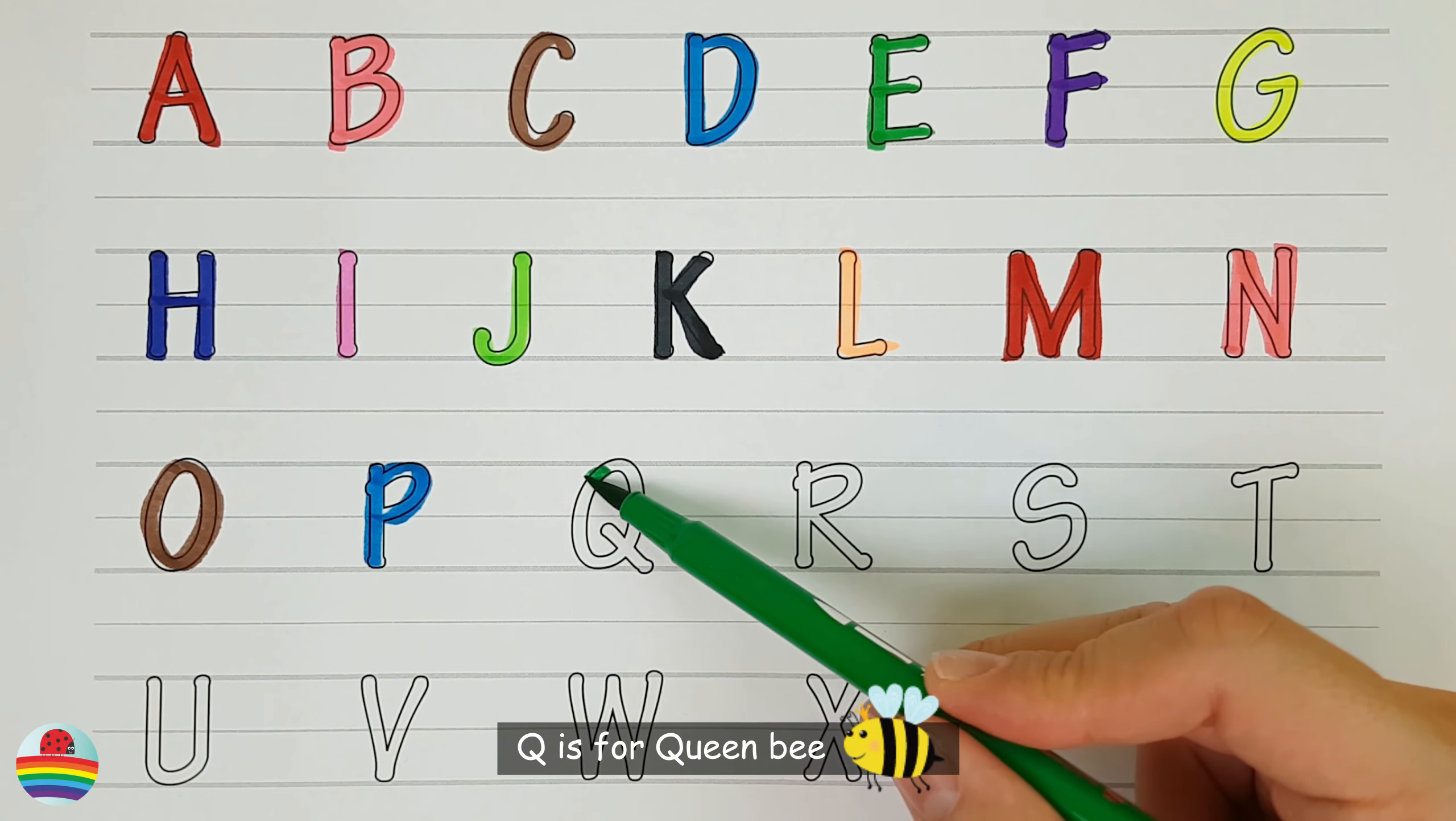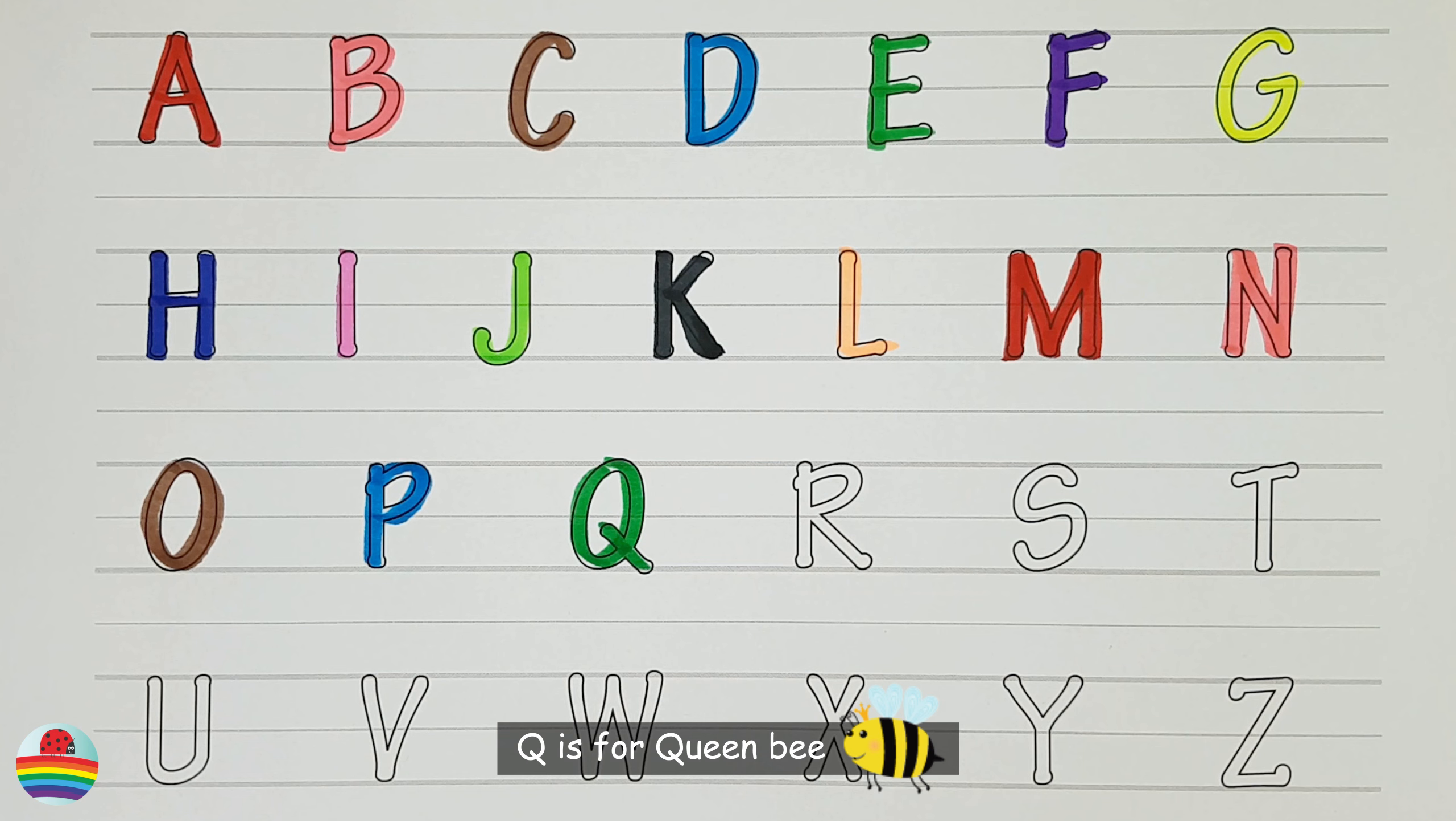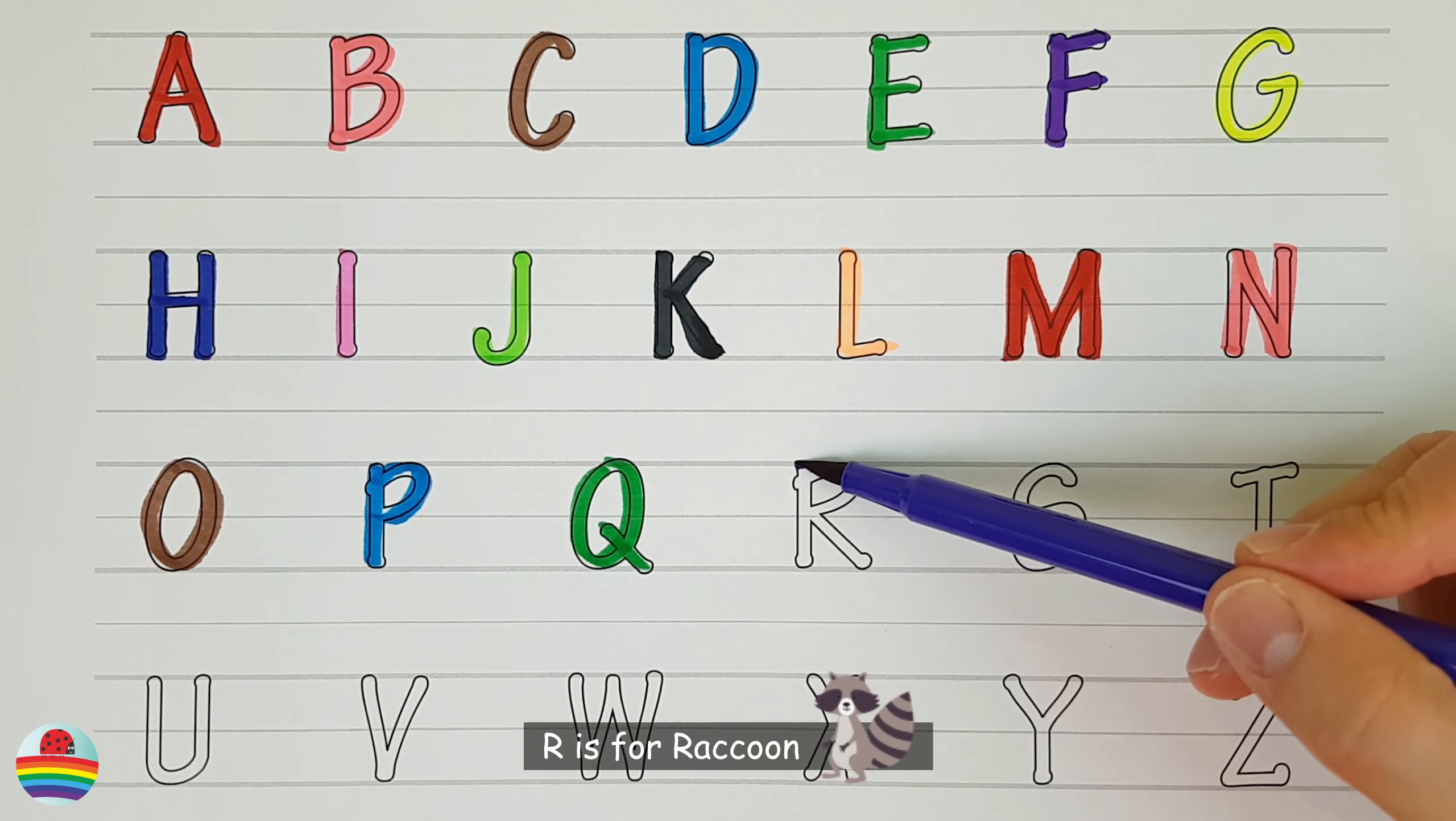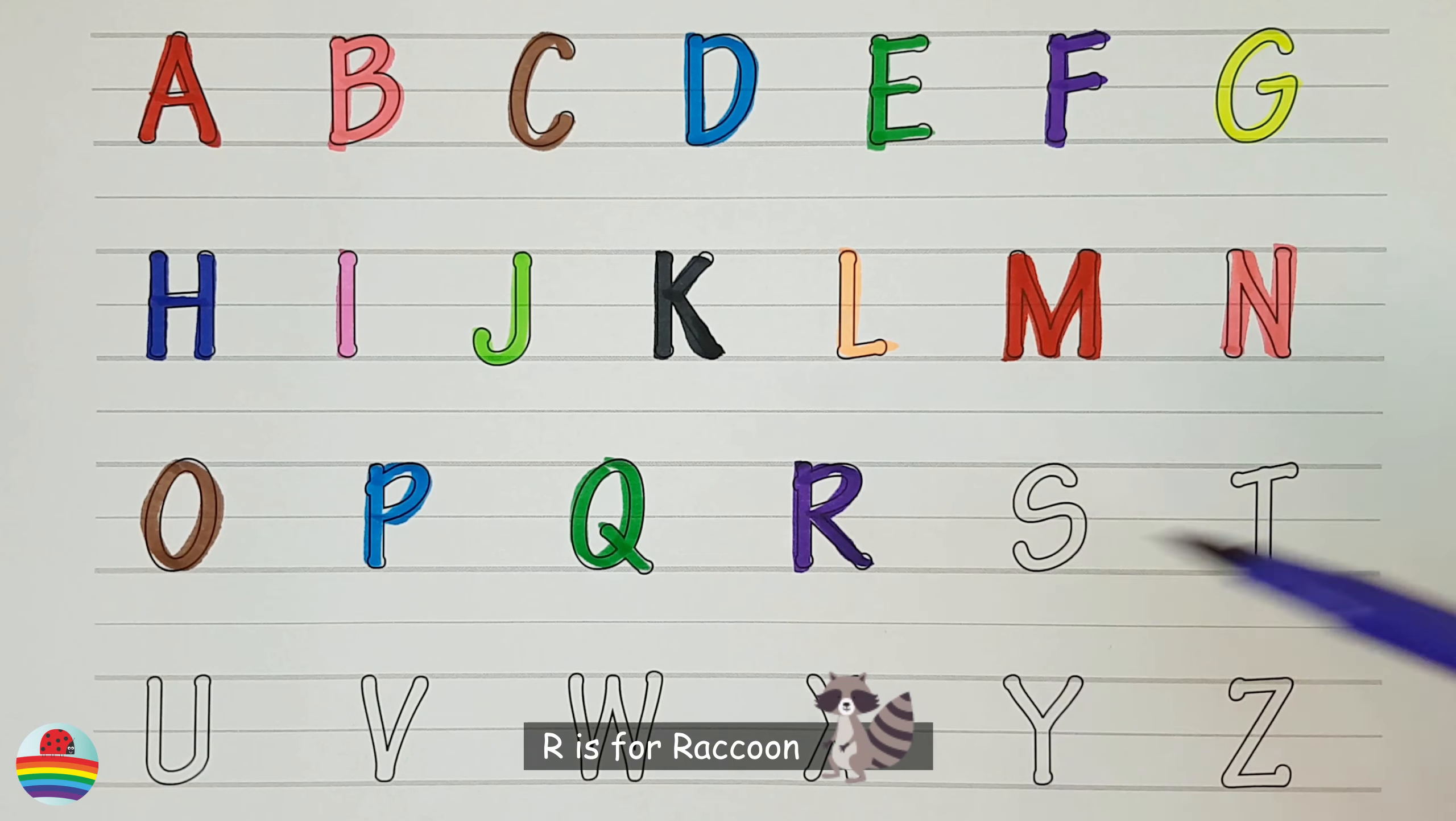Q. Q is for queen bee. R. R is for raccoon.